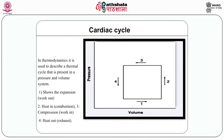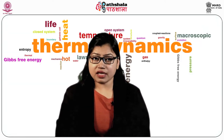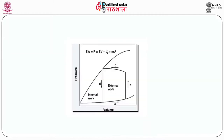Figure 2 shows a pressure-volume diagram. In thermodynamics, it is used to describe a thermal cycle in a pressure and volume system. 1 shows the expansion work out, 2 shows the heat in from combustion, 3 shows the compression work in, and 4 shows the heat out as exhaust. In Figure 3, we have the cardiac cycle of the left ventricle. Initially, when the electrical impulse passes from the AV node, the wave of depolarization passes over the ventricles via the bundle of His and initiates contraction.